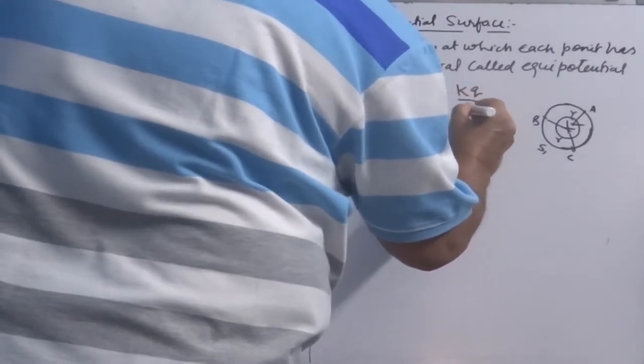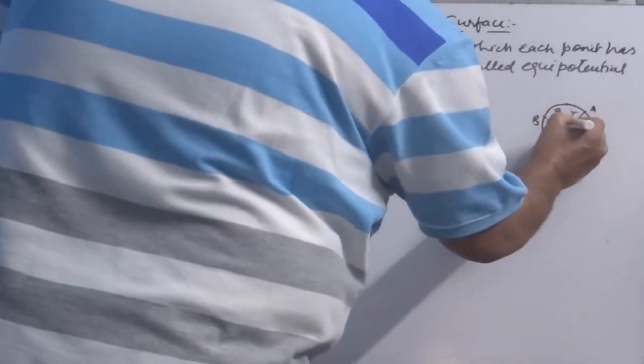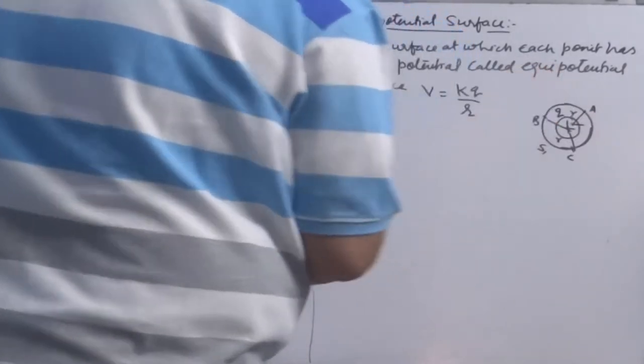Because radius of sphere is same for all these points and potential due to a single point charge is KQ over R. So, Q is not changing, R is not changing, K is constant.